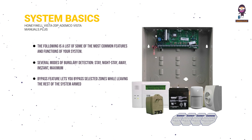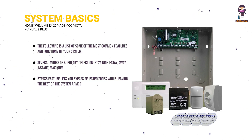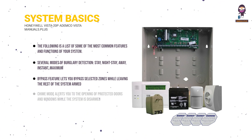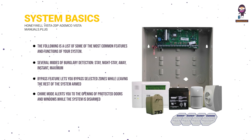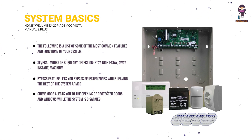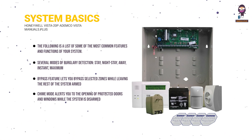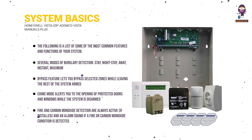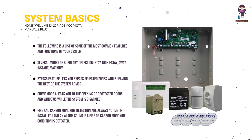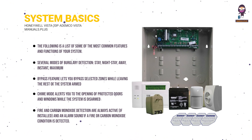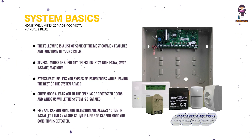The bypass feature lets you bypass selected zones while leaving the rest of the system armed. Chime mode alerts you to the opening of protected doors and windows while the system is disarmed. Fire and carbon monoxide detection are always active, if installed, and an alarm sounds if a fire or carbon monoxide condition is detected.